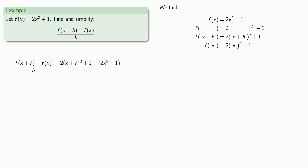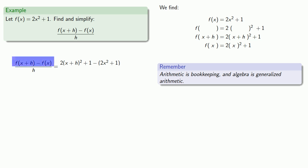Because we're subtracting f(x), we should throw the whole thing inside a set of parentheses. Remember, arithmetic is bookkeeping, and algebra is generalized arithmetic. We had all of this over h, and so it's still over h.